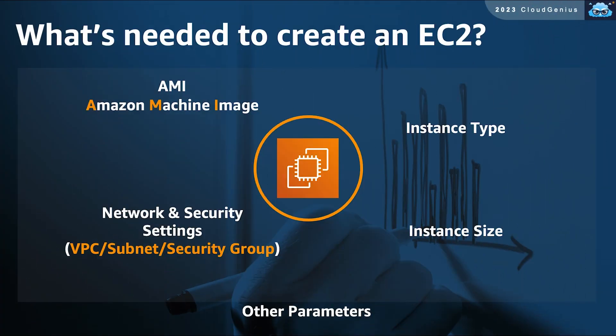So, what does it need us to specify in order to launch and create an EC2 instance? The first parameter to choose is your AMI, or what is known as the Amazon Machine Image. The AMI specifies what kind of operating system platform and its version would run on your EC2 instance — for example, choosing a Windows Server or one of the Linux distributions.